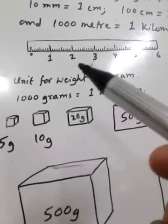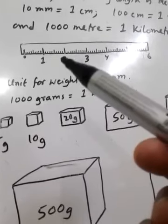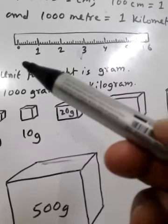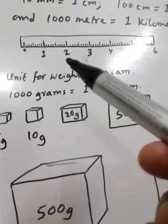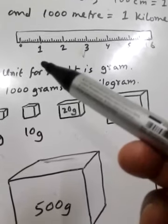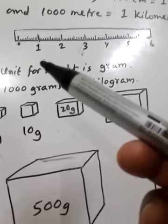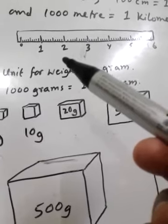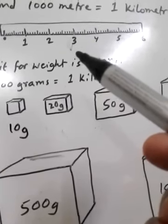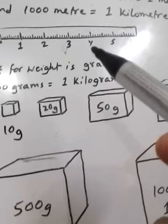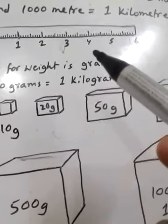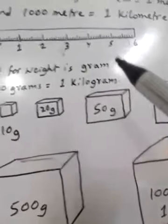From 1 to 2 is 10 millimeters. So 0 to 2 is 20 millimeters. 10 mm equals 1 cm, 20 mm equals 2 cm, 30 mm equals 3 cm, 40 mm equals 4 cm, and so on.